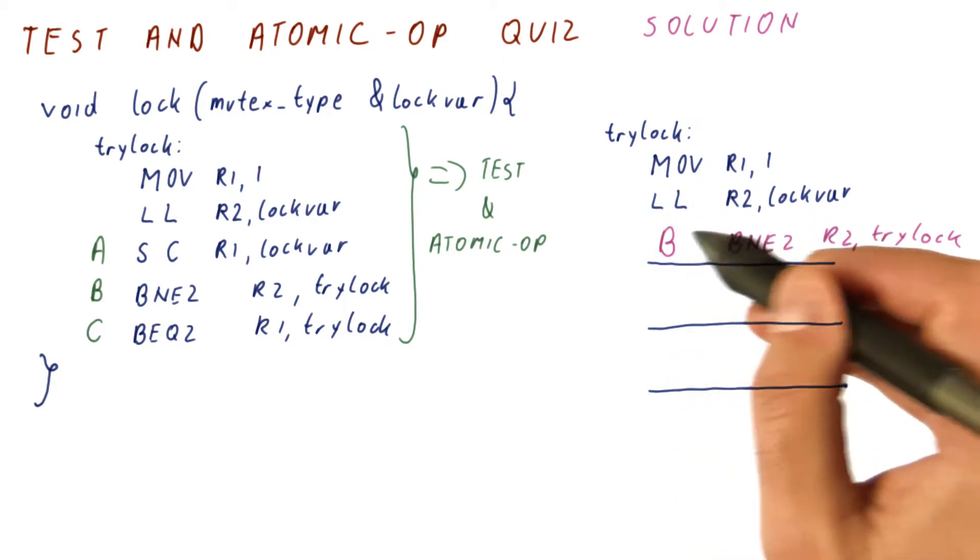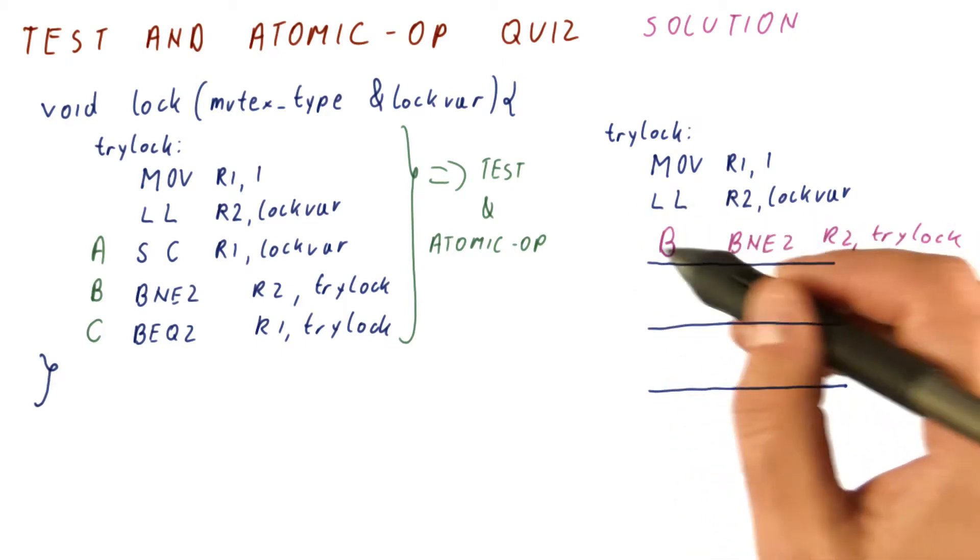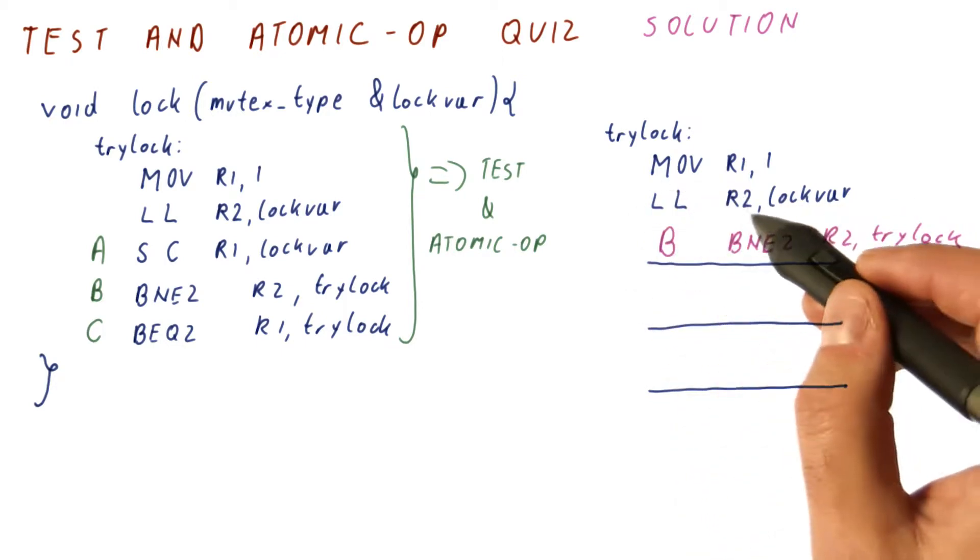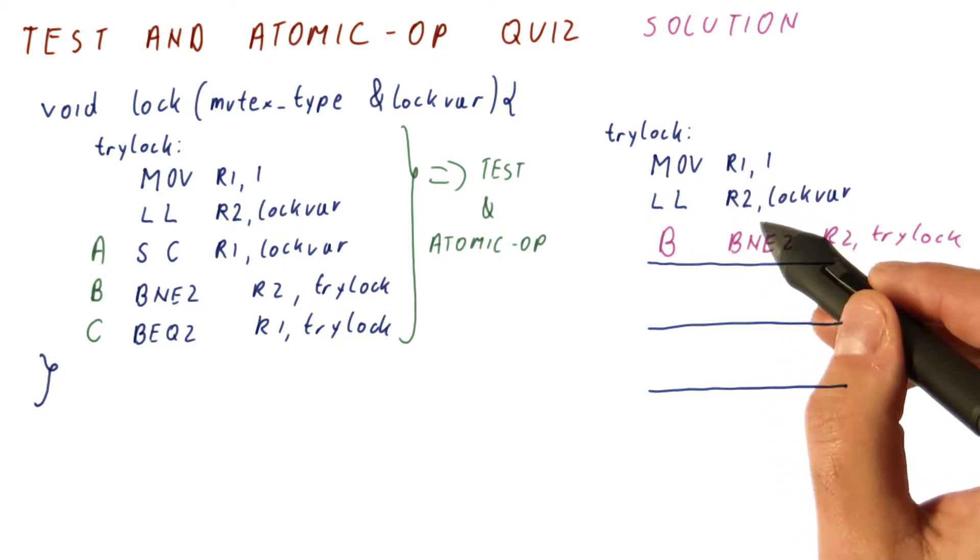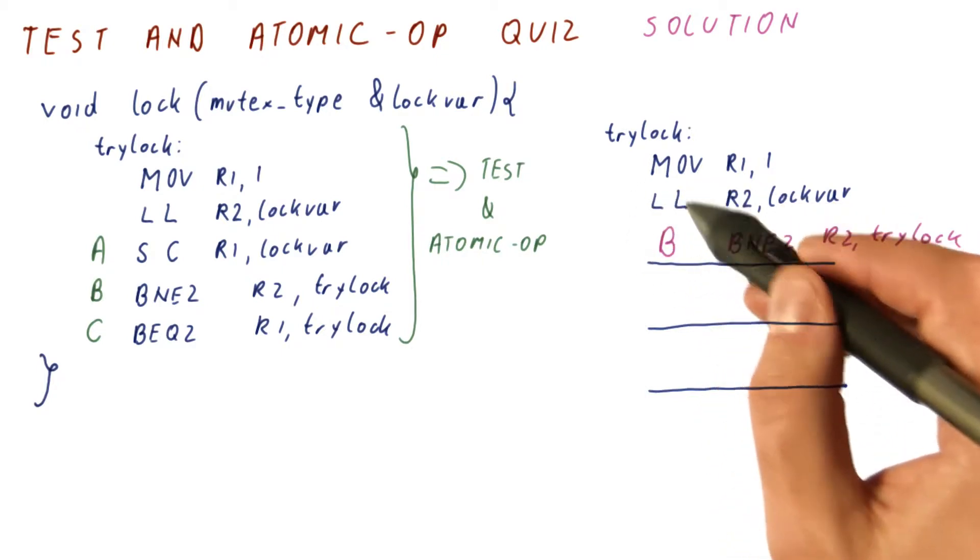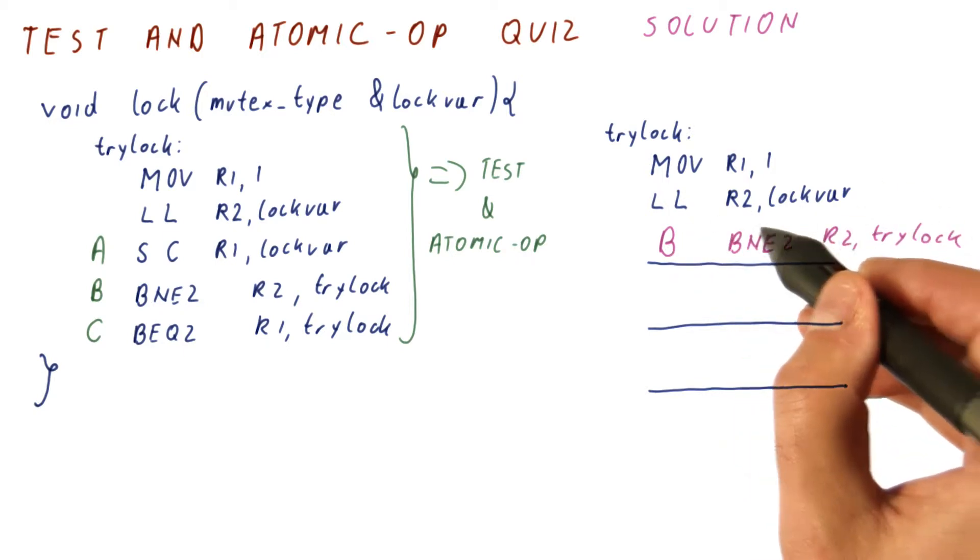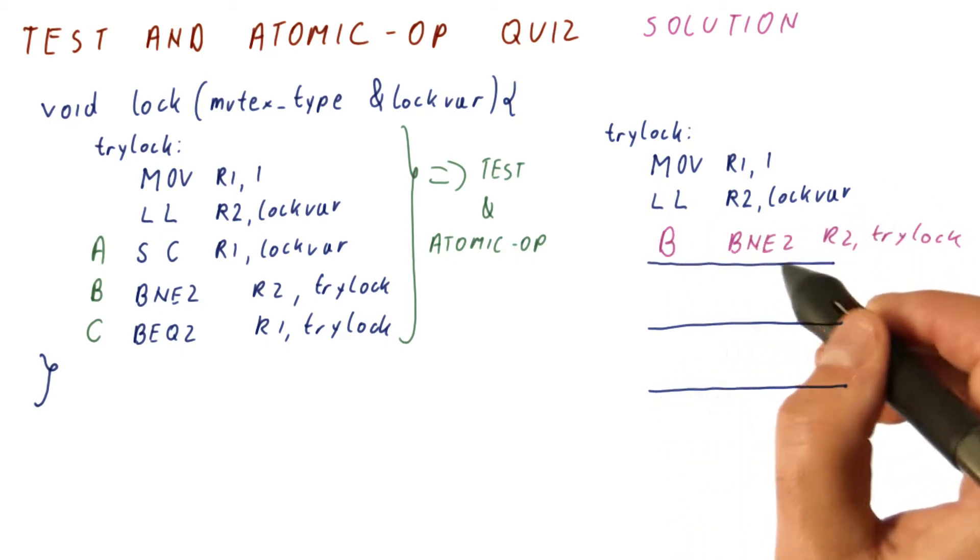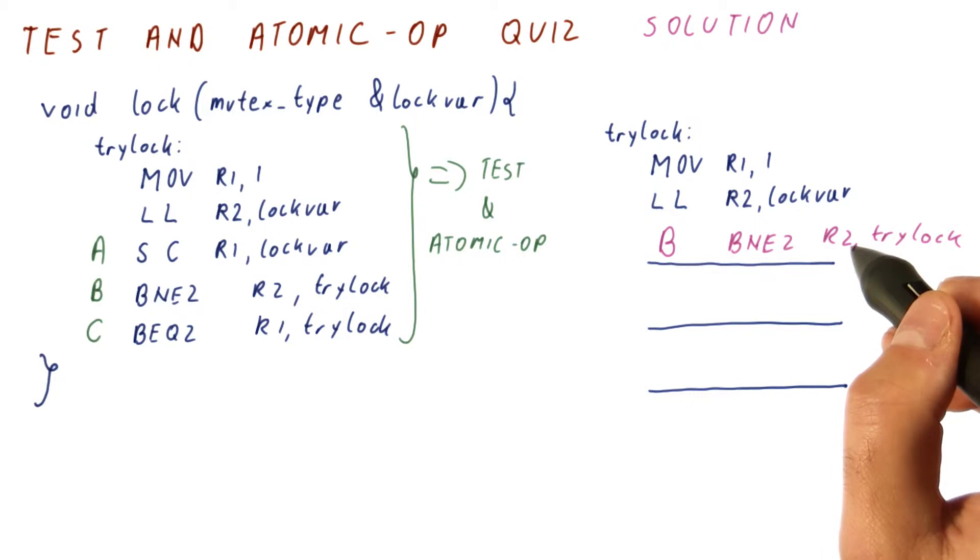The load link without the corresponding store conditional behaves just like a normal load. Yes, it's setting the link register every time, but we are not checking it, so it's just the same as if we didn't. But things get more interesting once we actually see an available value of the lock.